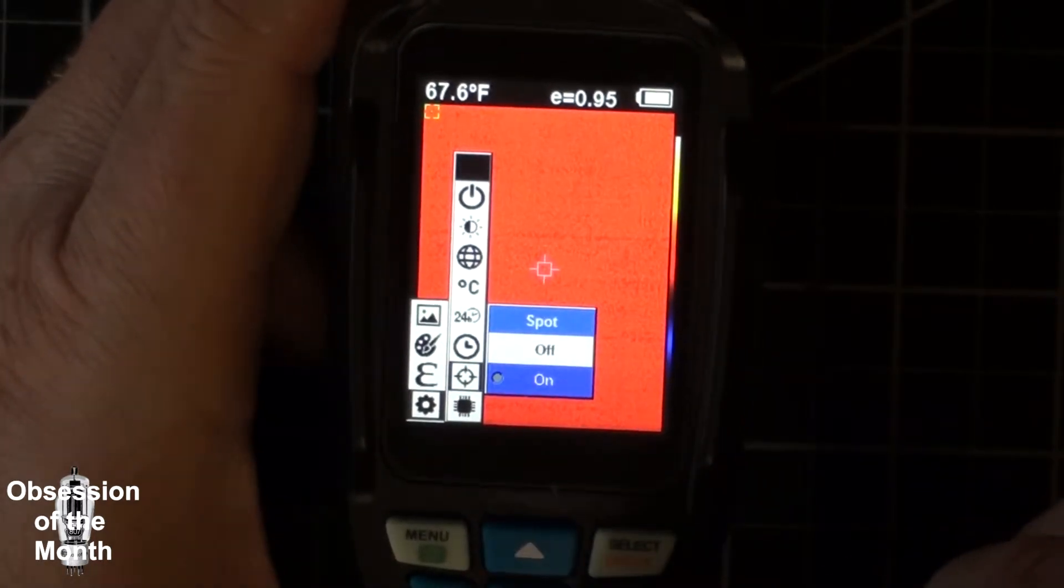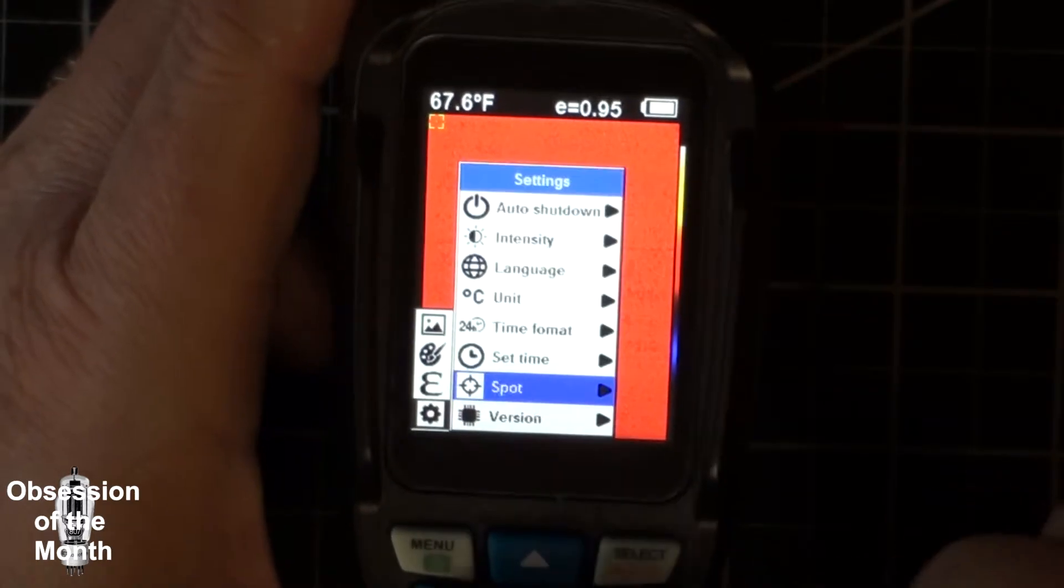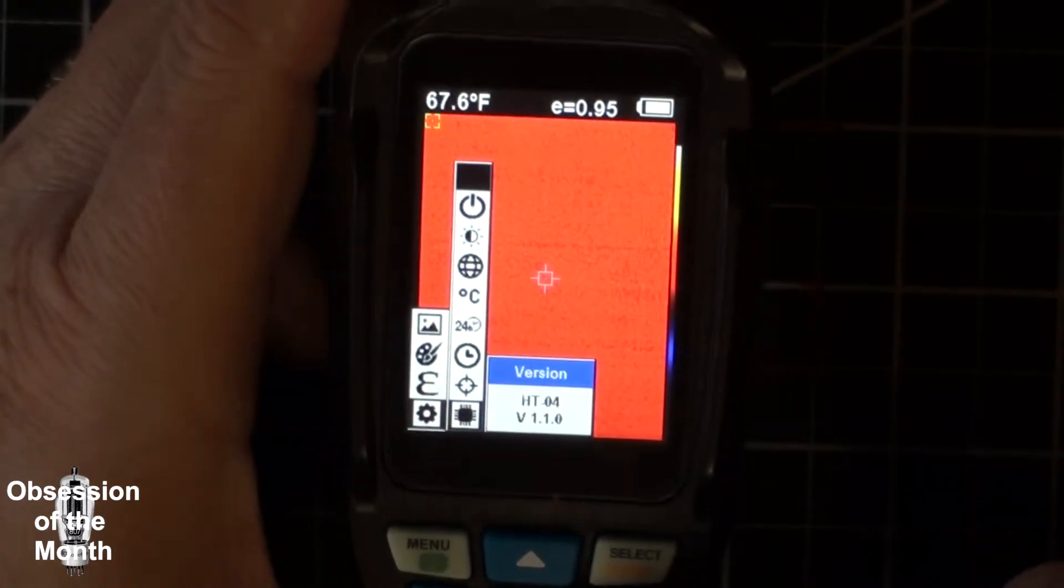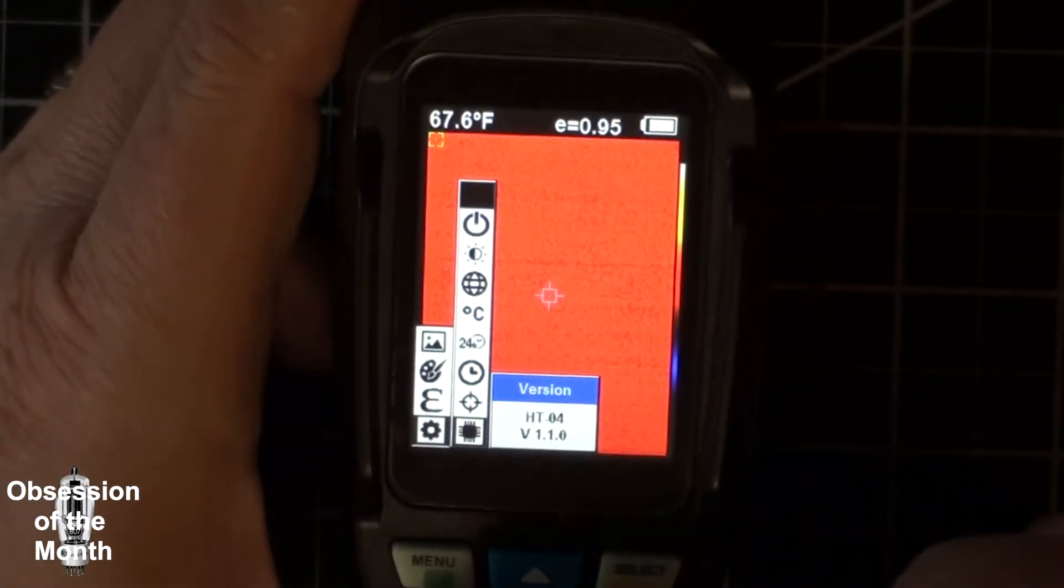This turns on the spot which is used to show you where it's measuring. And this shows the version number. As far as I can tell, there's no way to upgrade any firmware in this.